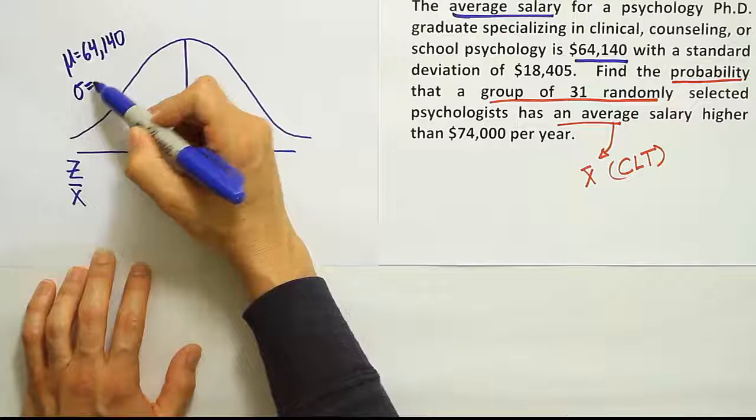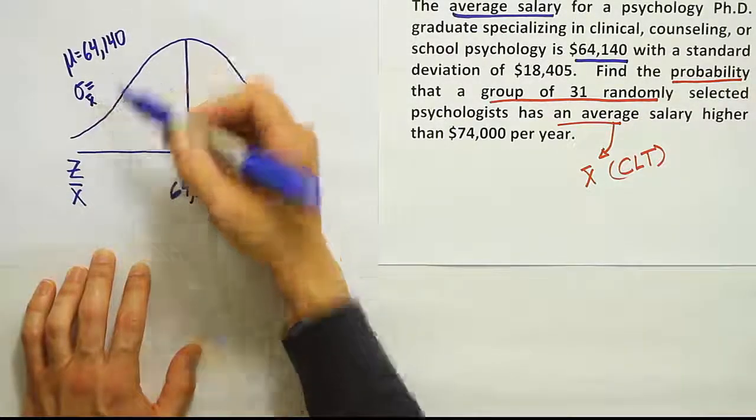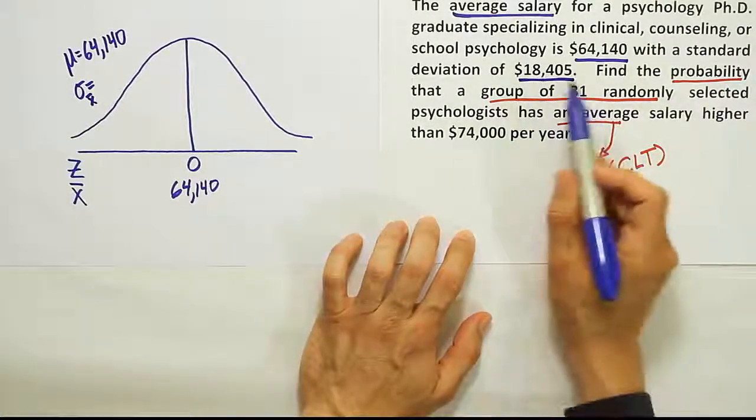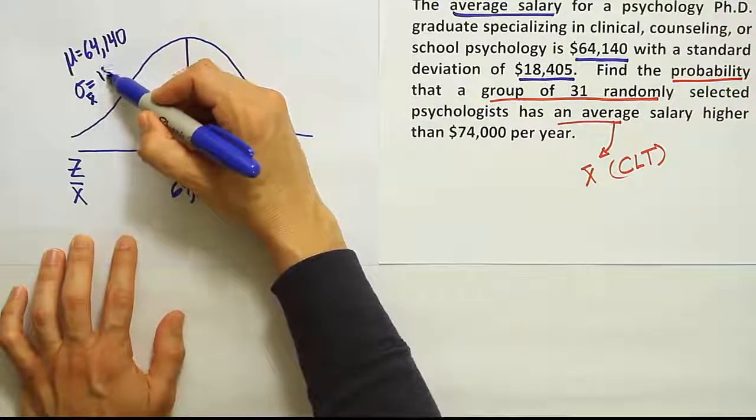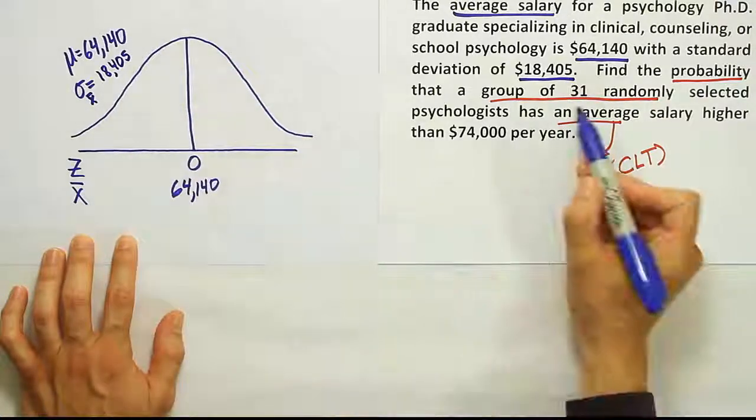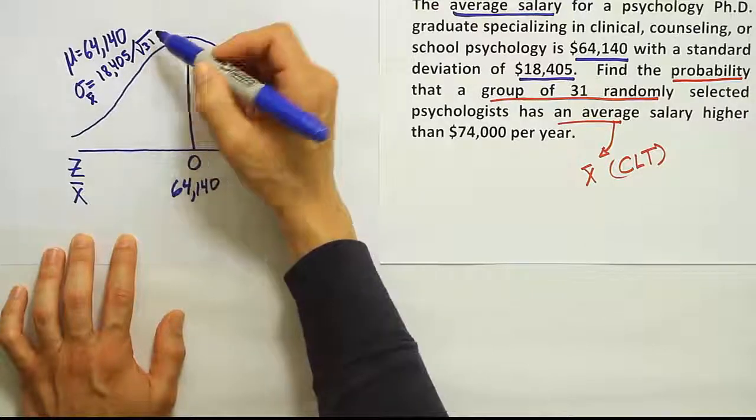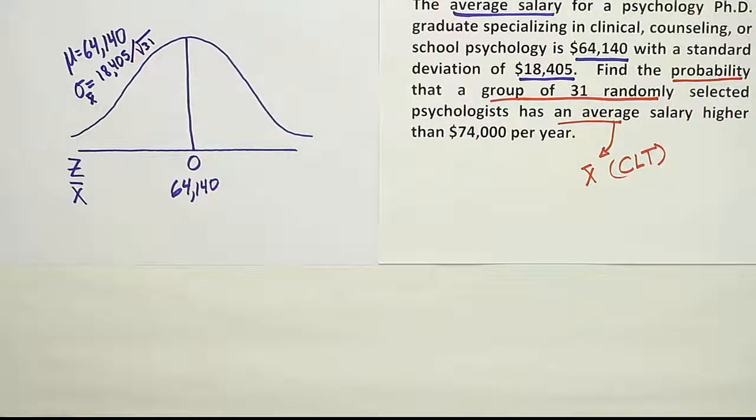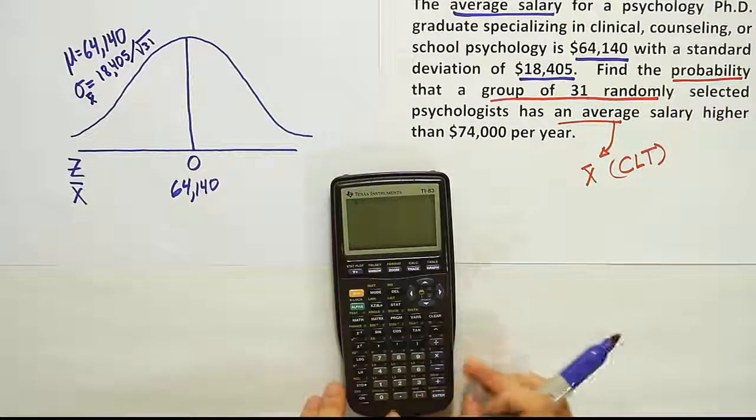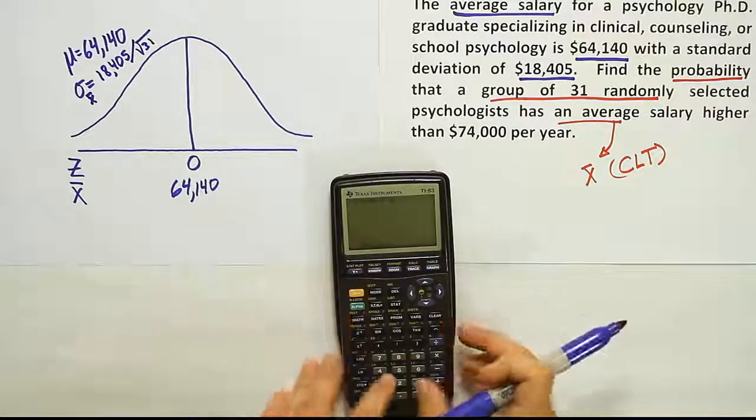Now the standard deviation in the problem is going to be slightly different because remember now we're talking about the standard deviation for X bar, not for X. So they gave us the standard deviation for X, right? For an individual psychologist's salary. So we're going to take that number that they gave us, the 18,405, but we're going to do something to adjust it since we're dealing with a group of 31 people. We're going to divide that number by the square root of 31. And so that's going to give us a new value to work with. Let's go ahead and do that just to get a decimal approximation. So we don't have to put that cumbersome thing in our formula later. So let's do 18,405 divided by the square root of 31.